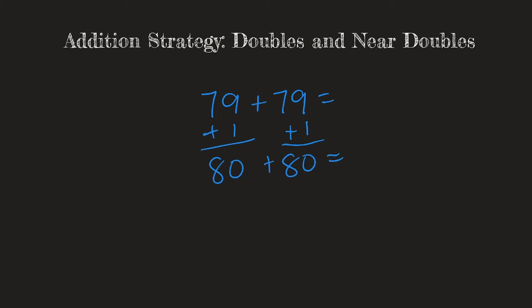So I know 80 plus 80 is 160. That's really easy. But here's the deal. I added 1 to each of them. That means I need to subtract 2 because I gave them each an extra 1 to work with.